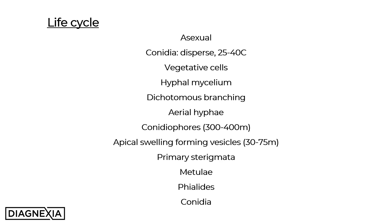Moving to the life cycle of Aspergillus, it is an asexual life cycle, which allows it to propagate much more readily. The conidia disperse, and at temperatures of 25 to 40 degrees Celsius they germinate into vegetative cells. The vegetative cells then transform into hyphal mycelia, and by a process of dichotomous branching at 45 degrees — highly characteristic of Aspergillus species — they form aerial hyphae. The aerial hyphae bear the conidiophores, which range in size from 300 to 400 microns. The conidiophores then develop an apical swelling forming the vesicle, which ranges from 30 to 75 microns in diameter.